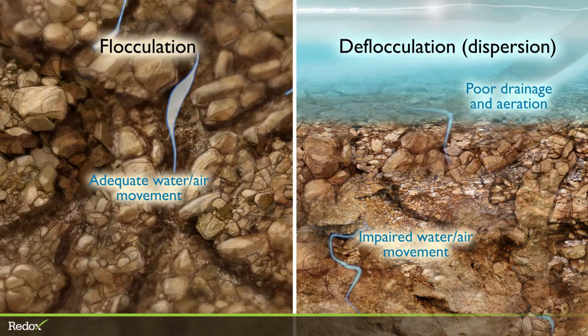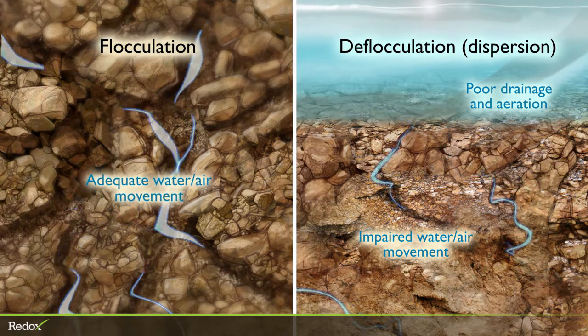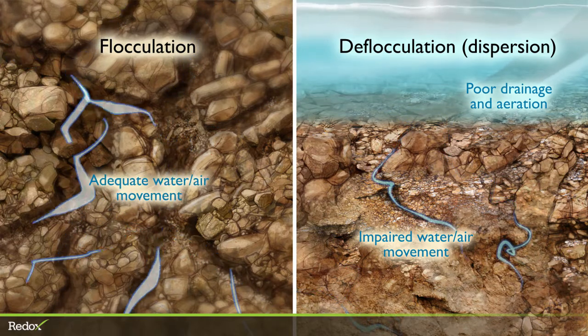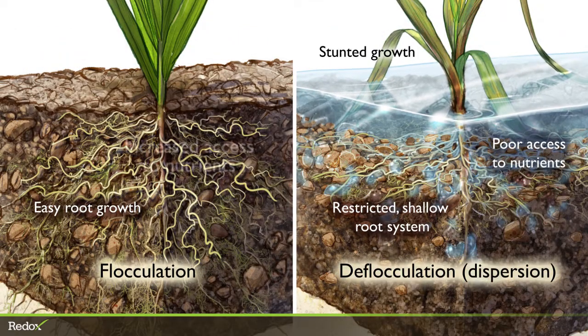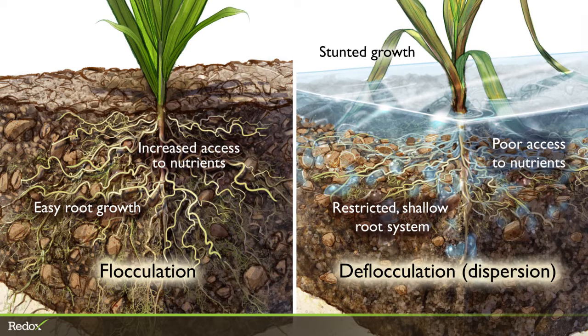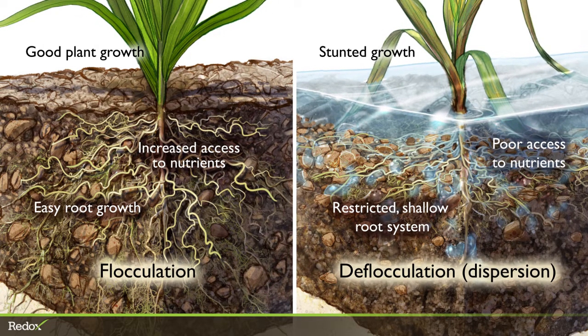However, in a proper ratio, mineral ions establish stable aggregates that create balanced water and air movement. This sets the stage for optimal root penetration, growth and function, nutrient uptake by the plant, and serves as a dependable environment that favors plant support of soil life.